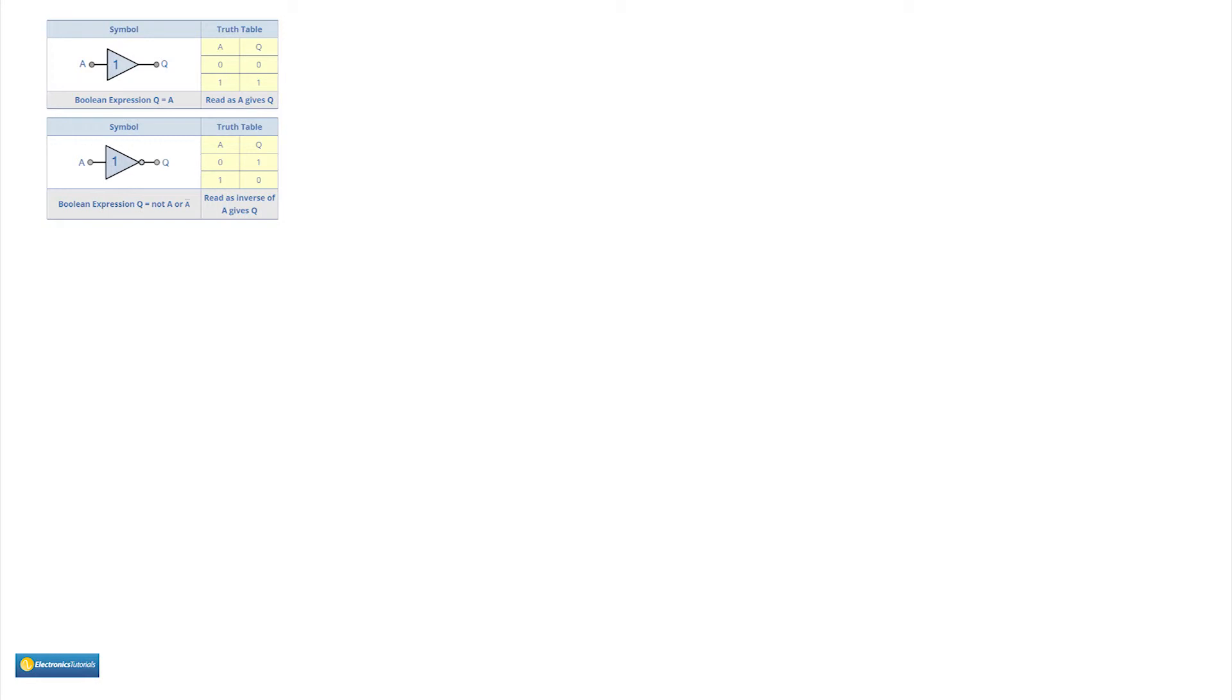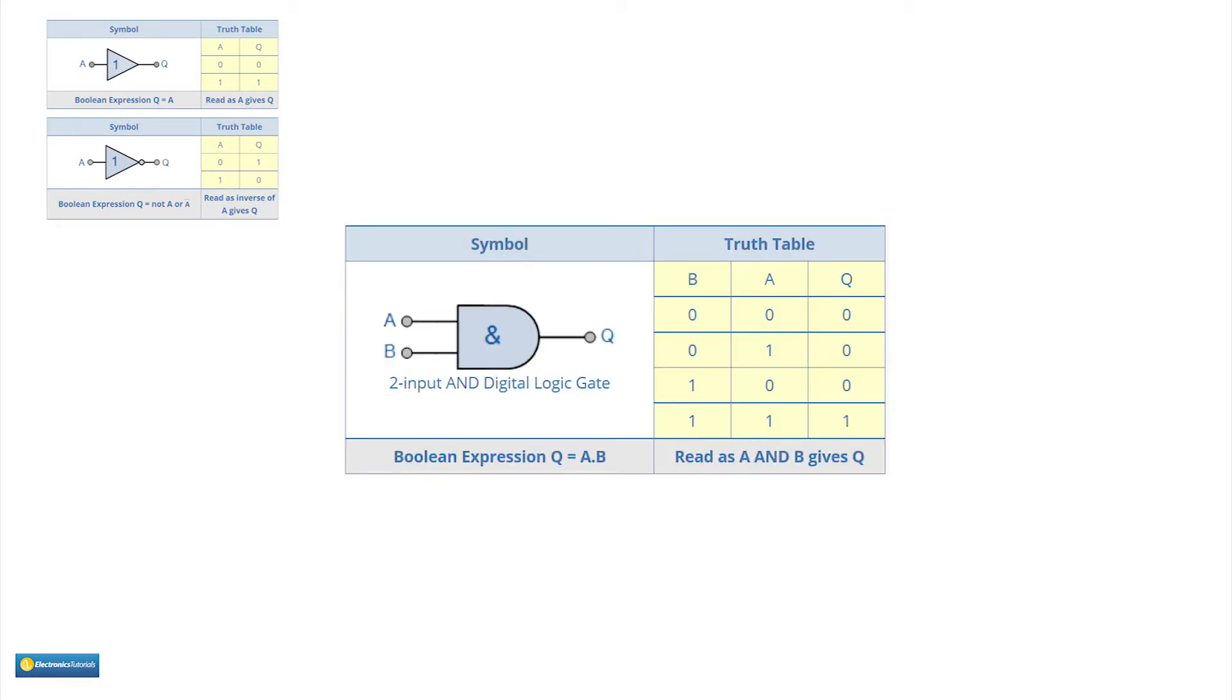Let's now look at two input devices. This is an AND gate. The truth table for the AND gate is shown here. Notice that output is 1, high or true only if A and B are high. Hence the name.